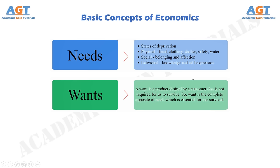Wants are desires for specific satisfiers of needs. The needs of the human are unlimited, so to satisfy unlimited needs a person desires for different products, services, and methods. Such desire to satisfy the needs is called wants. Wants depend on the culture, social class, and individual personality. A marketer can influence human wants by providing a variety of need-satisfying objects.